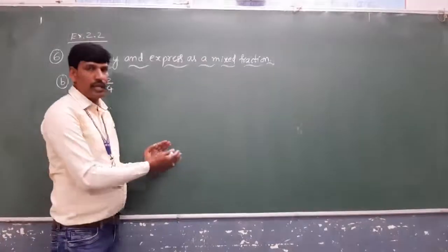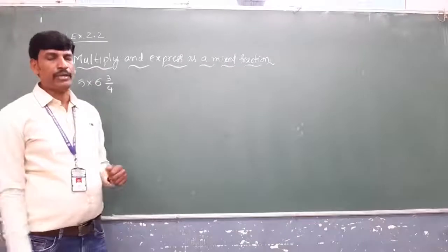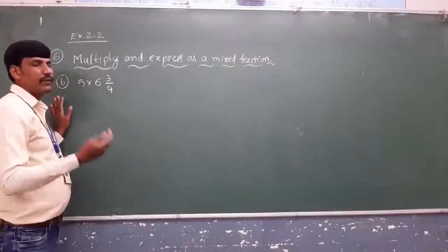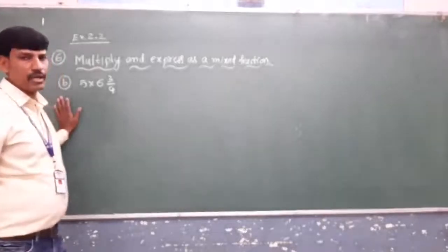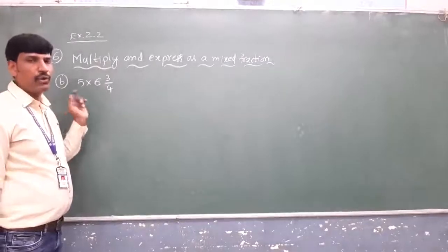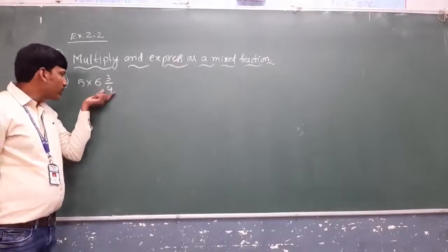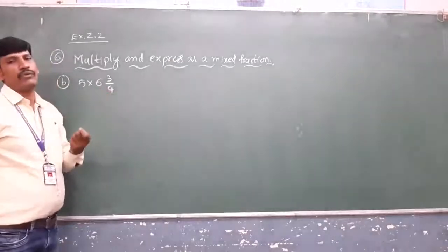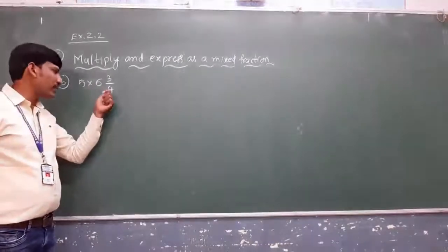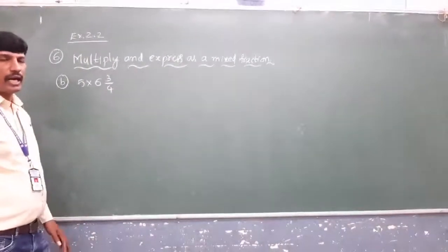Whatever answer we get finally, that answer should be converted into a mixed fraction. This is a simple multiplication — we already discussed it in previous examples. When multiplying a whole number and a mixed fraction, first convert the mixed fraction into an improper fraction, then multiply the whole number with the numerator to get the answer.